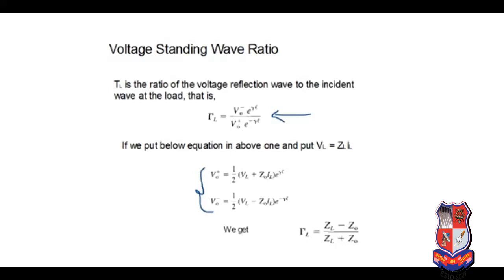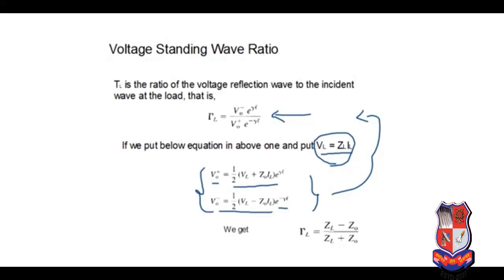Here we know that V0 plus is equal to 1/2 into (VL plus Z0 into IL) into E raised to gamma L. In this set of equations we are using VL, which is equal to ZL into IL — this is nothing but the multiplication of impedance into current. Same way, V0 minus is equal to 1/2 into (VL minus Z0 into IL) into E raised to minus gamma L. If we put this into the equation of reflection coefficient, with VL equal to ZL into IL, then we get gamma equal to (ZL minus Z0) upon (ZL plus Z0).